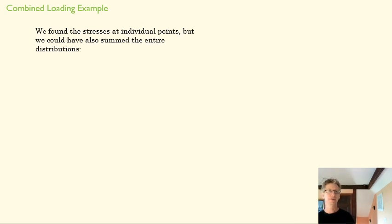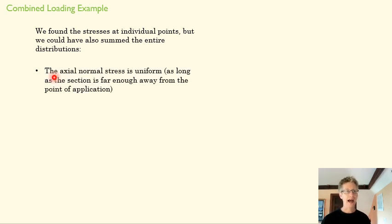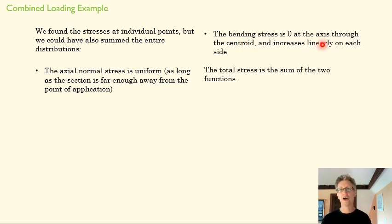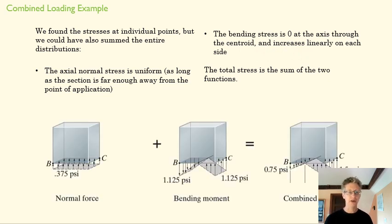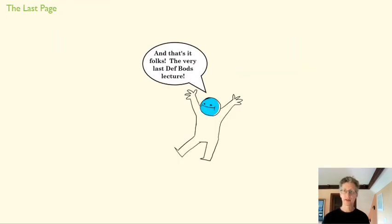So we found stresses at individual points. We also could have drawn these as summed over the entire distribution. The axial stress is uniform over the whole section. The bending stress is zero at the axis but increases linearly on each side. And then we can add those together. So we can add this whole field to this whole field and we find the combined load. We've combined the stresses caused by a combined load. So we can do that for a single point like we did on the previous pages, but we can also plot that over an entire section, which we've done here.